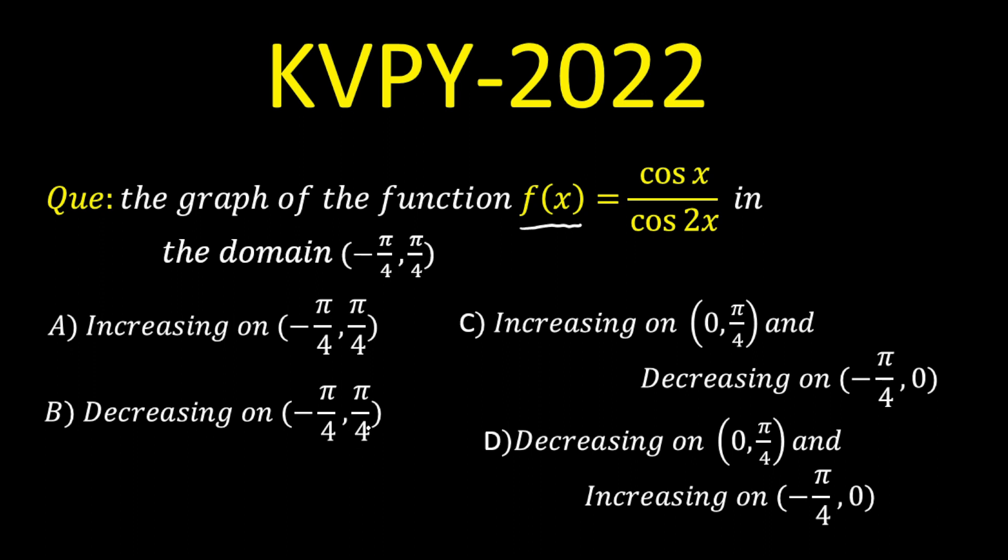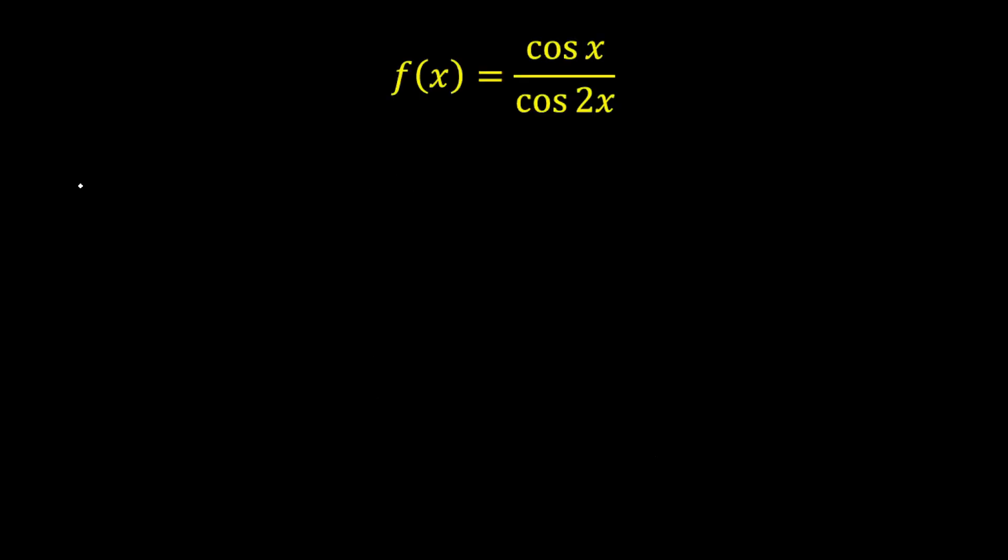Indirectly, they are asking us monotonicity of the function. Now, monotonicity of the function can be determined using f prime of x easily with the sign.